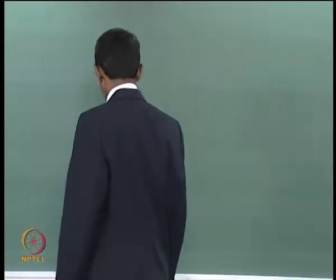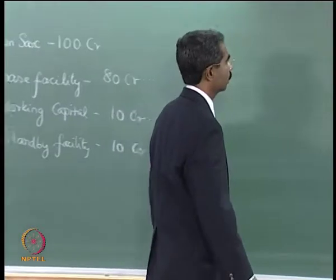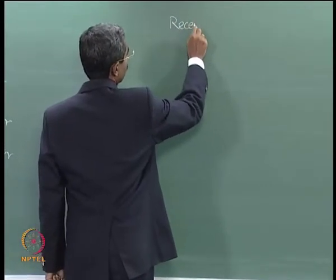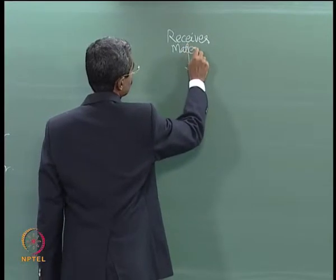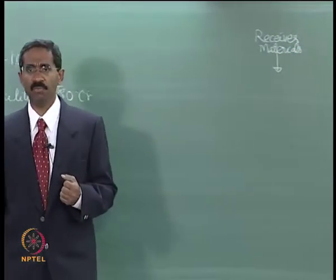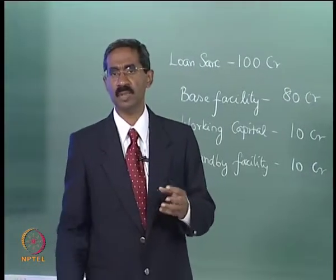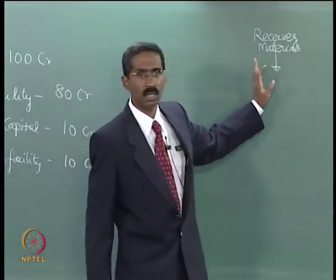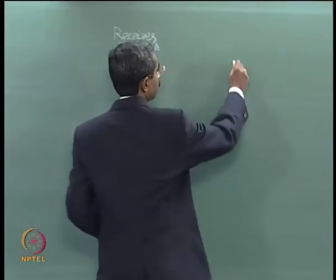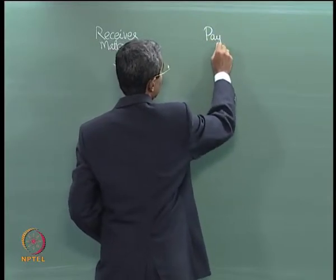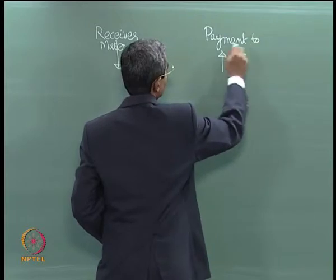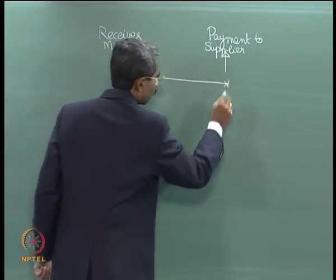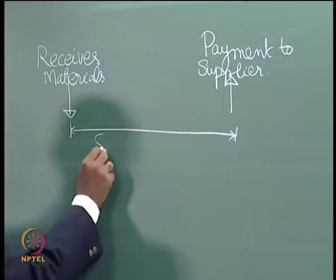There are several ways in which the company needs cash, and the working capital facility is essentially a loan arrangement which helps the company meet the cash deficit arising because of differences in the cash collection cycle. In the case of a power plant, the plant needs to purchase fuel like coal, and after receiving material, it pays the suppliers after a credit period — this is your supplier credit.